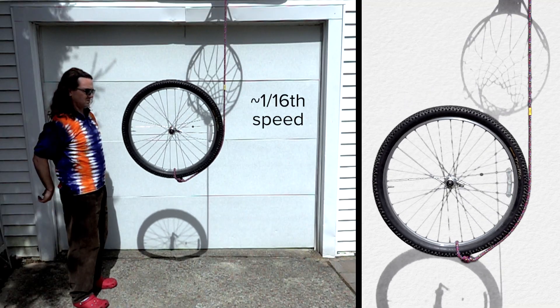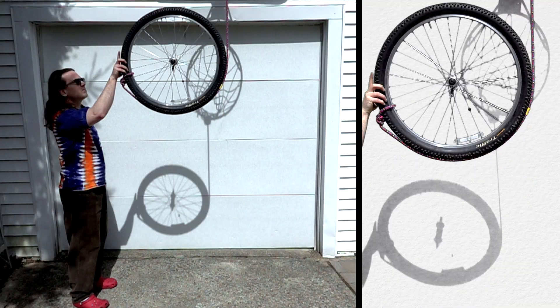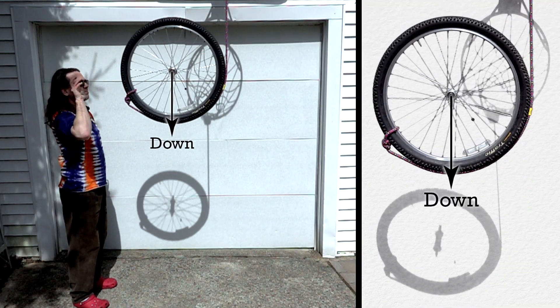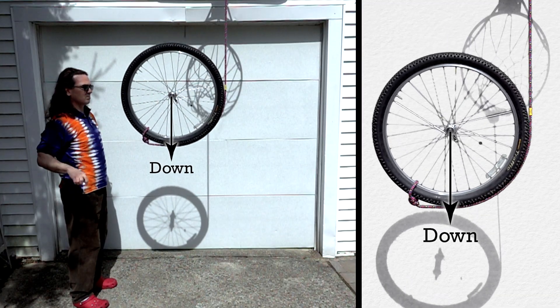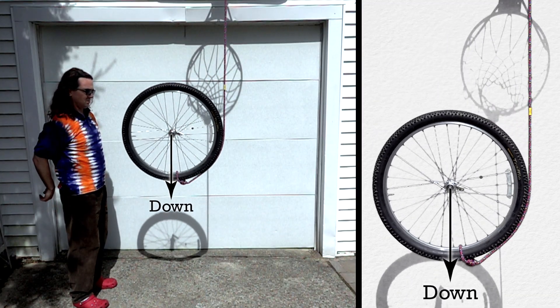Let's watch it again at 1/16th speed so we can see what actually happens. So, class, which direction does the wheel accelerate? Down. I can see it accelerates straight down, but why?